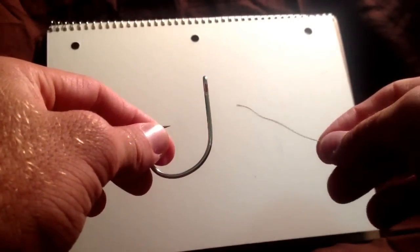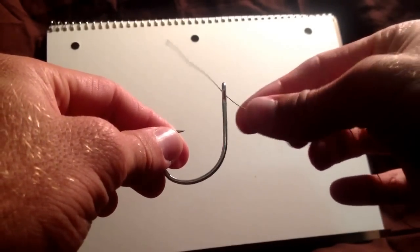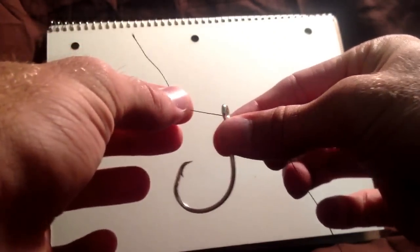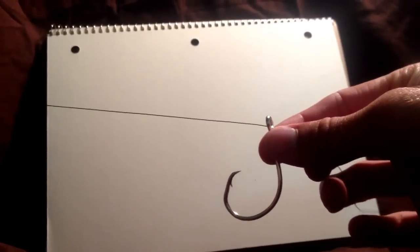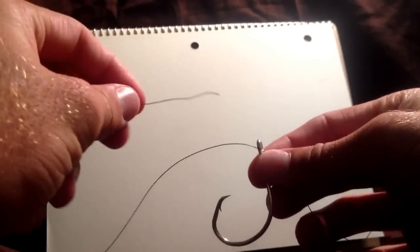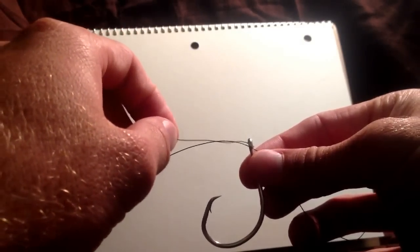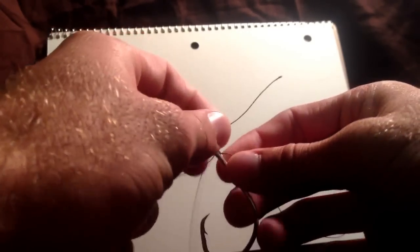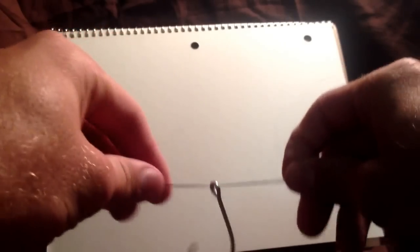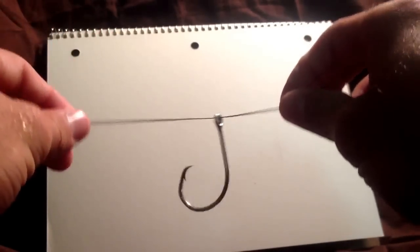Alright, the way you start this knot is you put the line right through the hole on the top of your hook and pull it out a good 6 inches. You then proceed by putting it back through the same loop that you just went through so that your line is just like this.